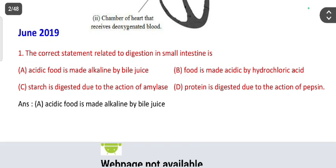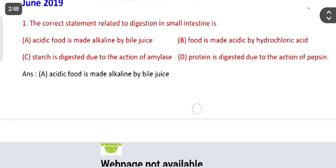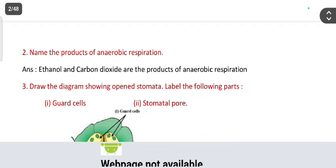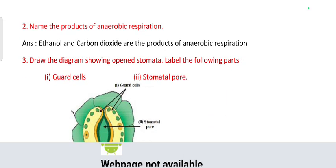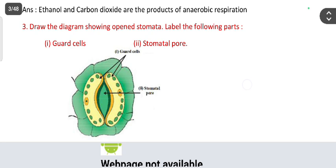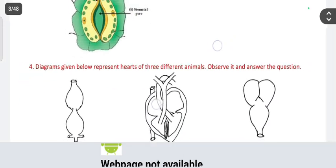In the multiple choice question for one mark, the correct statement related to digestion in the small intestine is: acidic food is made alkaline by bile juice. Also in June 2019, name the products of anaerobic respiration — ethanol and carbon dioxide are the products. Next, draw a diagram showing open stomata and label the parts — this carries three marks.